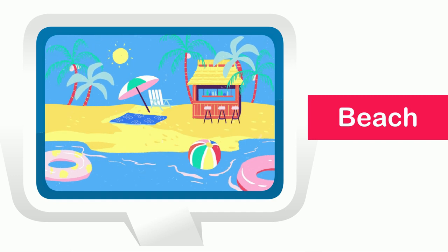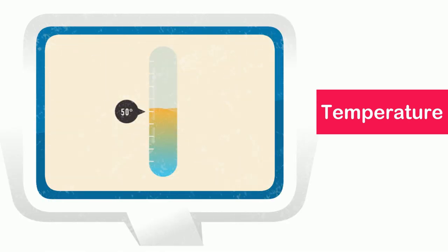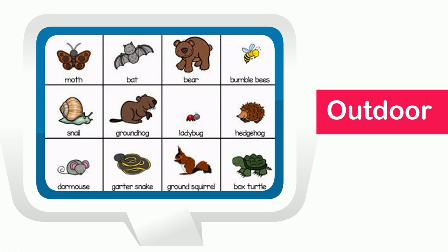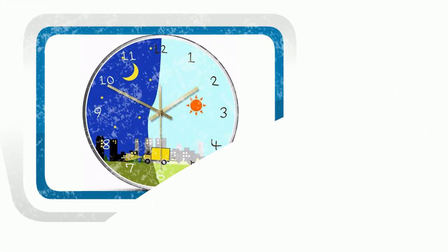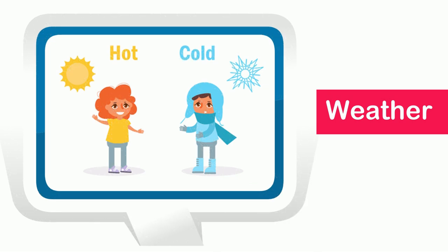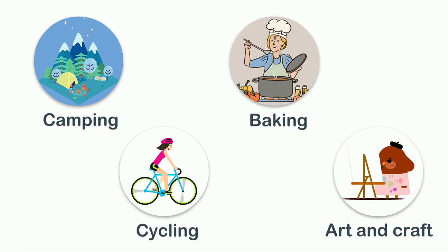Autumn is the time of year when leaves start falling from the trees and the temperature starts to cool down slowly as the next season, winter, approaches. Many animals gather food during this season to prepare for winter. The weather is neither too hot nor too cold, making it good for outdoor activities day and night, including camping, cycling, art and craft, and baking.